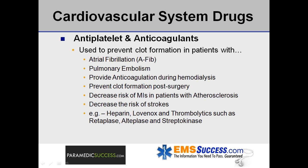Antiplatelet and anticoagulant drugs are used to prevent clot formation in patients with AFib, pulmonary embolism, as well as provide anticoagulation during hemodialysis, prevent clot formation post-surgery, decrease the risk of MIs in patients with atherosclerosis, and decrease the risk of strokes. Examples include heparin and Lovenox, as well as thrombolytics such as reteplase, alteplase, and streptokinase.